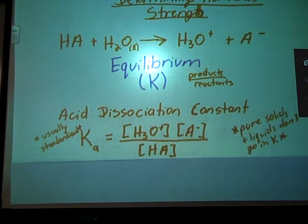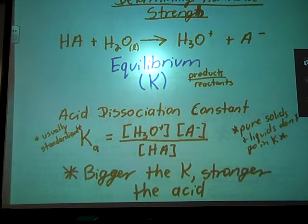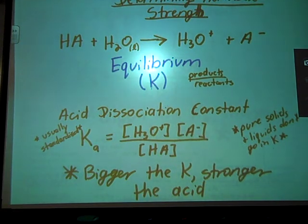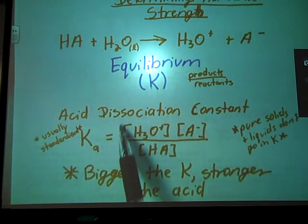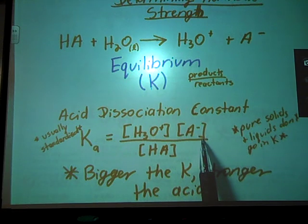A Ka for a particular acid is usually standardized, so it can be looked up. And again, the bigger the K, the stronger the acid. A bigger K means that we have shifted more towards this product's side, which is a dissociated set of ions.